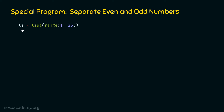After this, we need to create two separate lists — even numbers and odd numbers. Initially they are empty, and later we will add even and odd numbers from the list li into them. We create the empty lists like this: even_numbers equal to square brackets, and odd_numbers equal to square brackets.